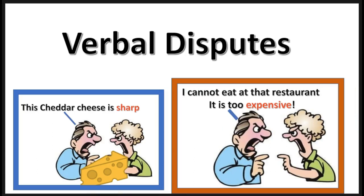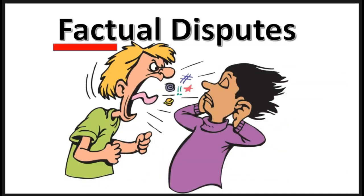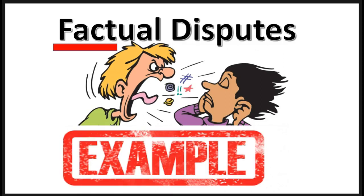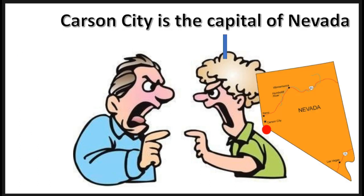These examples of disputes are verbal disputes. These are not factual disputes. Factual disputes arise over disagreements about facts. For example, Jack says Reno is the capital of Nevada. Jill says, you're wrong — Carson City is the capital of Nevada.